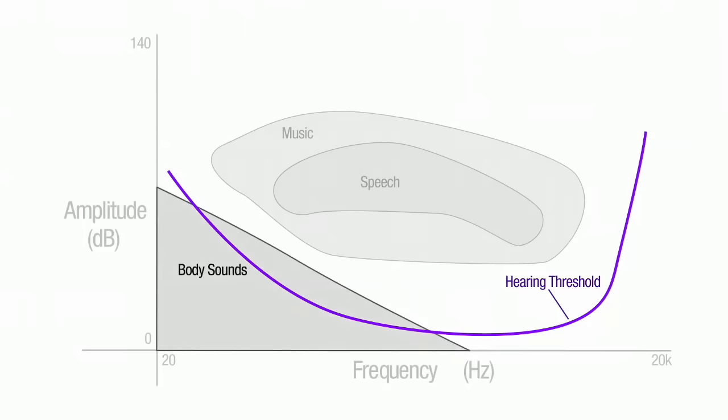Body sounds are often difficult to hear because they're very quiet and they occur at very low frequencies. Most cardiovascular sounds actually occur below our threshold of hearing with only a fraction audible to the human ear.